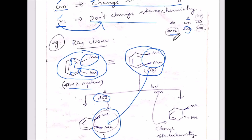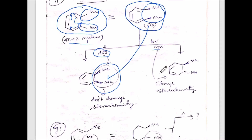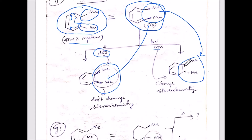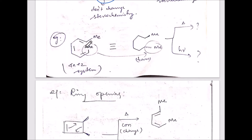Under photochemical condition, 4n+2 gives con rotation. For con, you change the stereochemistry. The reactant is cis, so you change it to trans — one wedge bond and one dotted bond. So the steps are: check if all pi bonds are involved, identify 4n or 4n+2, apply Woodward-Hoffmann rule, and if con, change stereochemistry; if dis, keep the same.